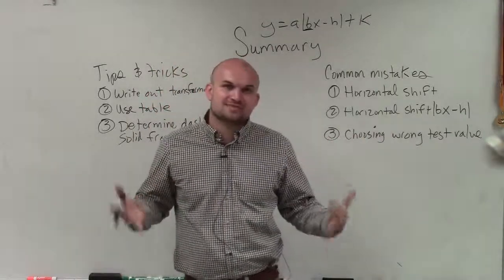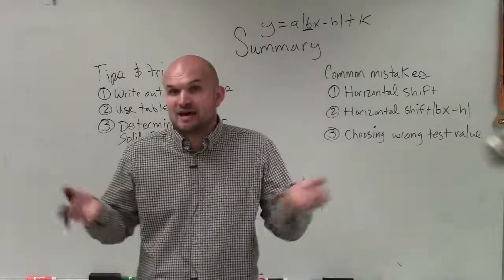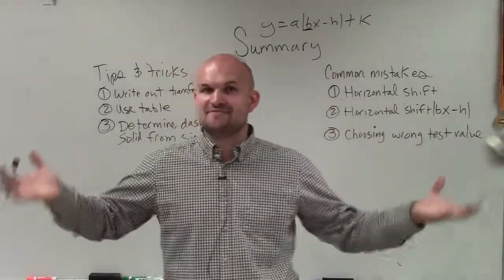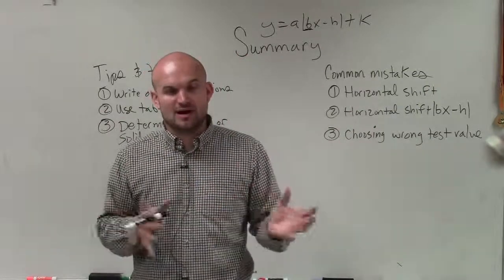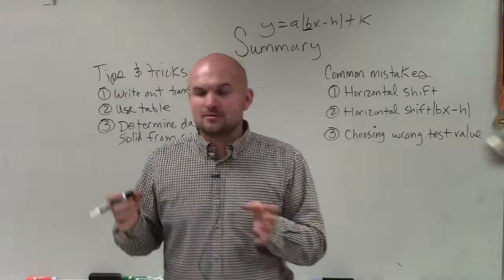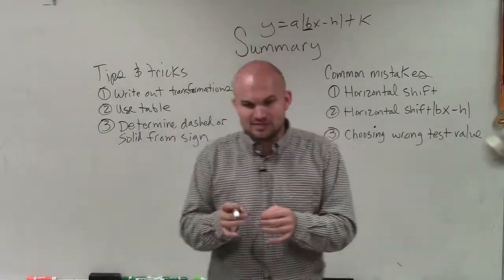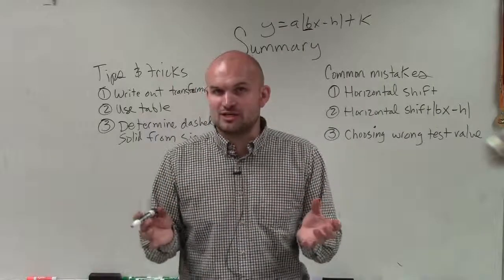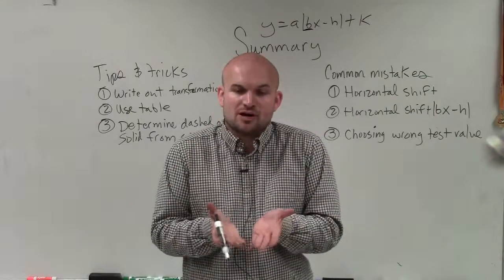Remember, the process for graphing absolute value inequalities is exactly the same as graphing absolute value equations. We first want to identify all of the transformations, identify what the new vertex is, if I'm going to be shifting left or right, up or down. And then, based on those transformations, identify my new vertex. And if I don't have a reflection, or if I don't have any compression or stretching, then I simply just follow the pattern of my parent graph.